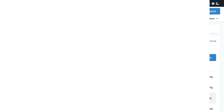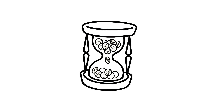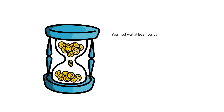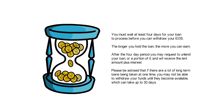You can lend as much EOS as you want to REX, but you must wait at least 4 days for your loan to be processed before you can withdraw your EOS. The longer you hold the loan, the more you can earn. After the 4-day period, you may request to un-lend your loan, or a portion of it, and will receive the lent amount plus interest.